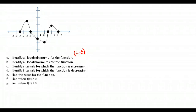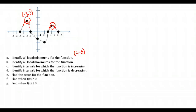Next they ask for local maximums — high points on the graph where it peaks and then goes back down. These have places to the left and right going downward, so they are local maximums. One is at (-3, 3) and the other is at approximately (4, 2). Those are our two local maximum points.